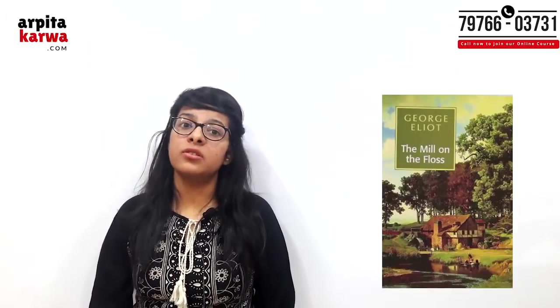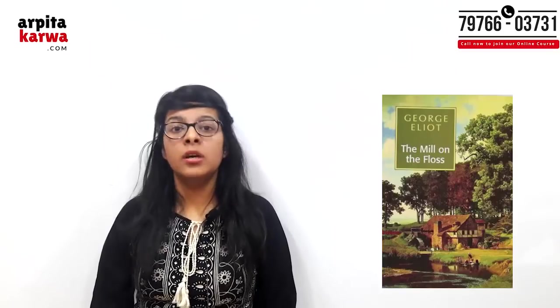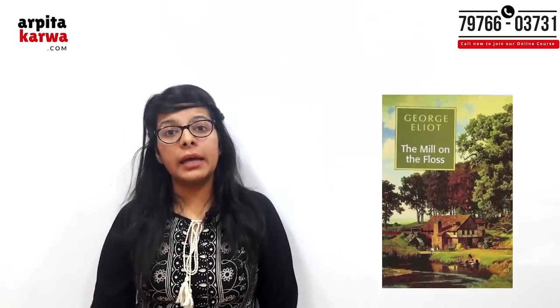George Eliot's Mill on the Floss is a story of a brother and sister named Maggie Tulliver and Tom Tulliver. An important closing line states: 'In their death they too were united.' This line has also been asked in the NET exam several times, so you must read the summaries of both Middlemarch and Mill on the Floss.